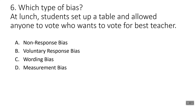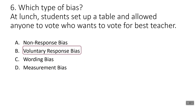And number six: at lunch, students set up a table and allowed anyone to vote who wants to vote for the best teacher. This is voluntary response bias. The people conducting the survey are not selecting the sample — they are letting the sample select themselves by volunteering. Only people that feel strongly about certain teachers are probably going to vote, so that's voluntary response bias.